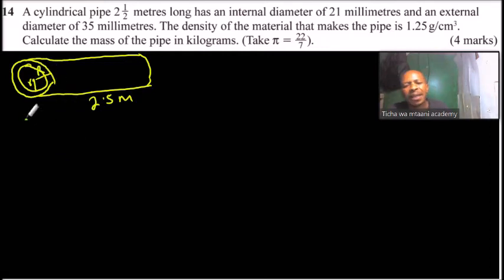To find the volume, first of all, we know that mass is equal to volume multiplied by density, because we have density is equal to mass over volume. So you cross multiply to get the mass. So we need to get the volume. And the volume, because we have a hole at the center, what we need is to get the volume of the material that makes the pipe.